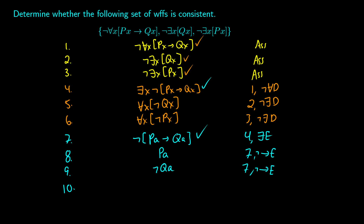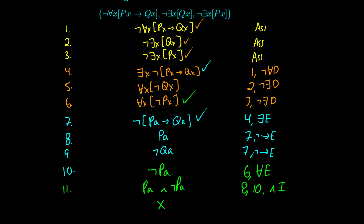Now we have lines 5 and 6 left: 'for all x, not qx' and 'for all x, not px'. Line 5 may not be very useful, but 'for all x, not px' on line 6 is helpful. Because it's a universal, we can use a constant we've already used. So from line 6, universal elimination with a gives us 'not pa'. Now we have a contradiction: pa from line 8 and not pa from line 10. From lines 8 and 10 via and-introduction we get a contradiction, so this branch closes.